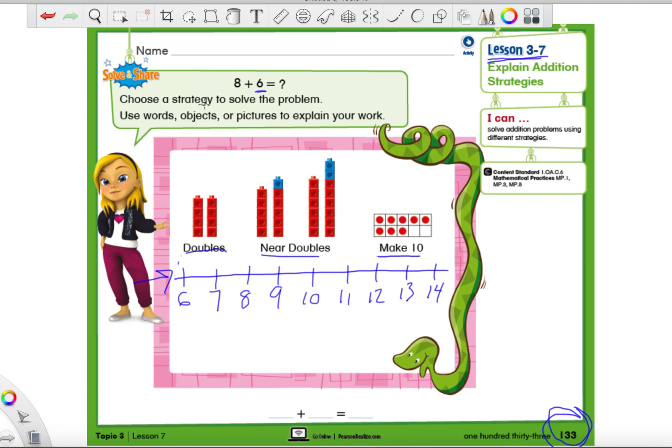So they are giving us the addition problem, 8 plus 6. And then it says, choose a strategy to solve the problem. Use words, objects, or pictures to explain your work. Oh my gosh, how did I forget this? We could also draw a quick picture. So any extra space you have, you can use that to draw a quick picture, and I'll also go through that later on too. But let's test this out. I want you to use one strategy that you really, really like to use for addition, and solve 8 plus 6, which is this problem right here. So go ahead, solve 8 plus 6 on your own, and we're going to go over the different ways we could solve this.